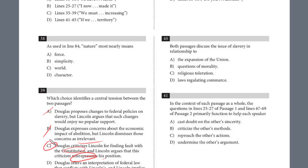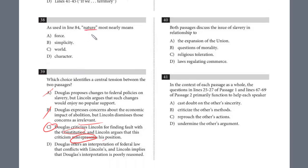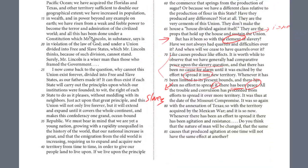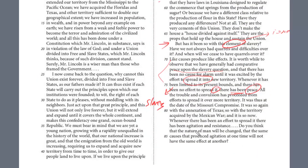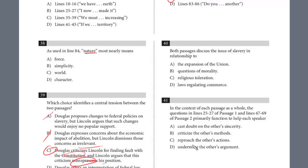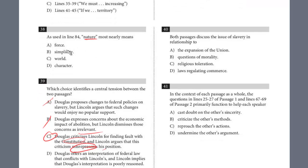I skipped question 38, so let me go back and do this now. This is still part of passage two but just a word in context. What does 'nature' mean in line 84? 'Do you think that the nature of man will be changed — that the same causes that produce agitation at one time will not have the same effect on another?' So this is really asking about the makeup of man, what he's made of. The nature of man — force, simplicity, world — it's definitely 'character.' You can always substitute that: 'the character of man,' the makeup, the composition. The answer is D.